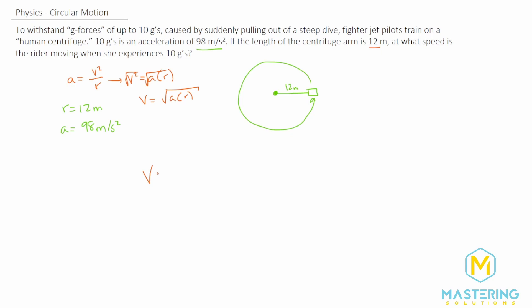So the velocity is equal to the square root of 98 meters per second squared times the radius of 12 meters.